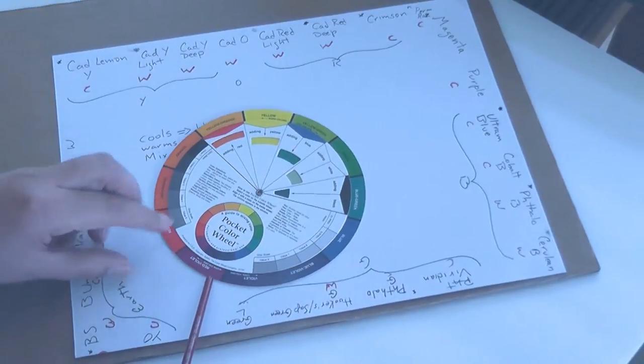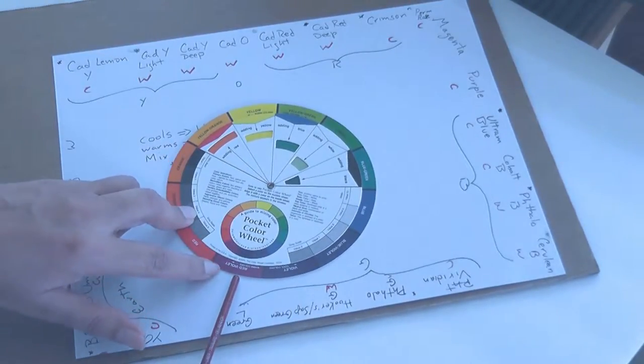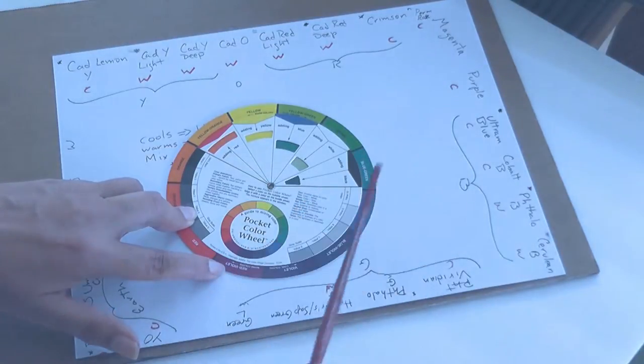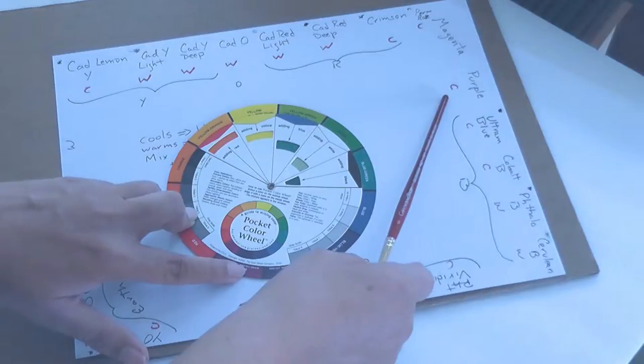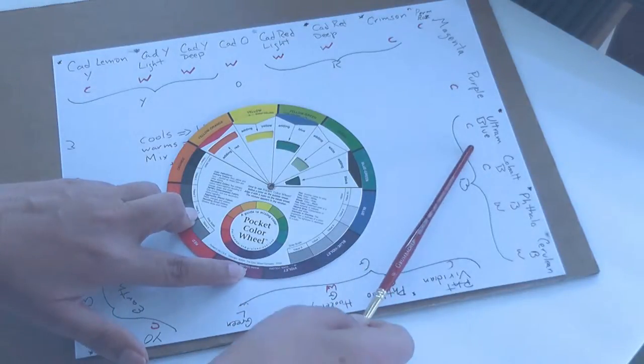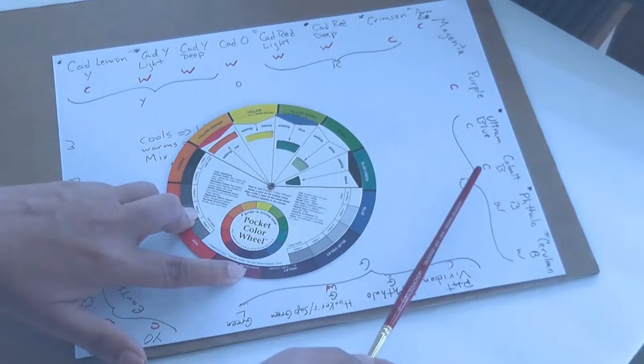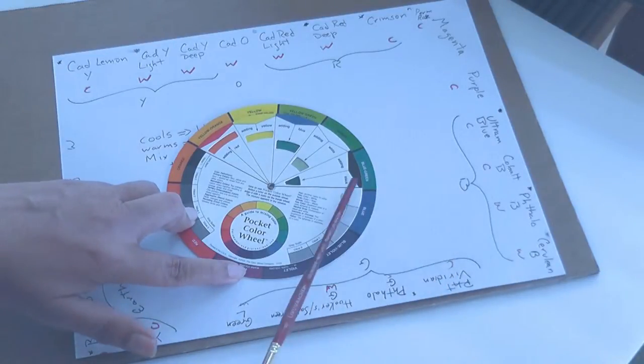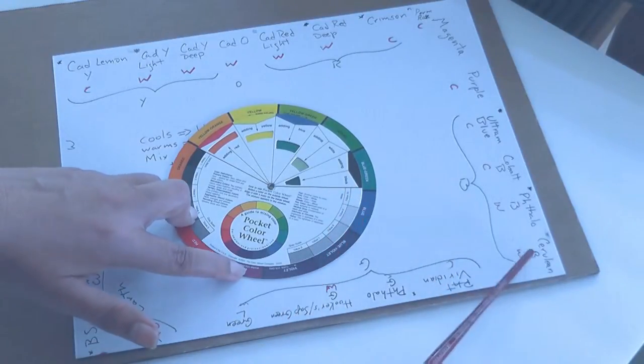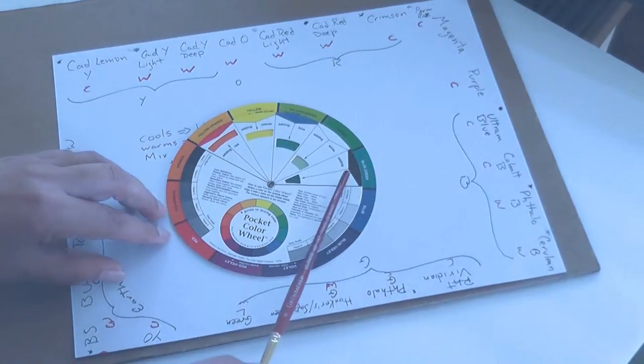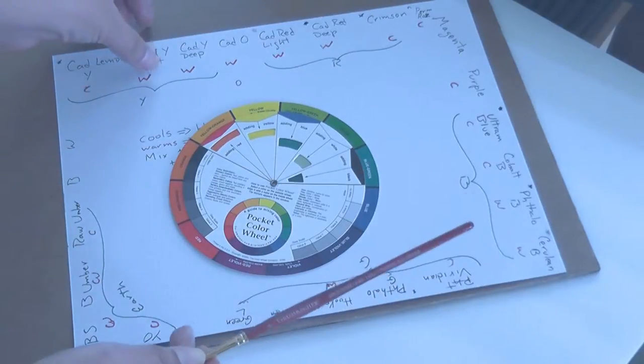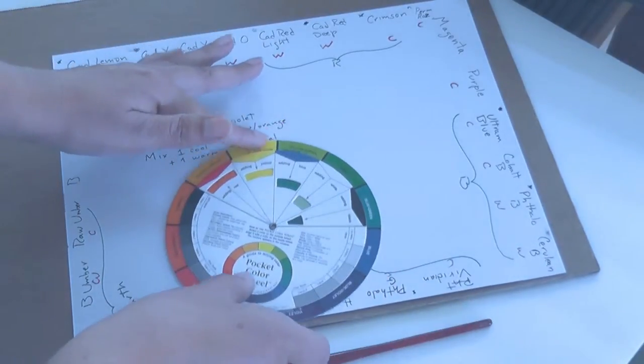Then it keeps going with red violet, which is crimson magenta, then violet purple, ultramarine blue, phthalo blue, cerulean blue, and lighter blue, then the blue-greens. Let me just move this.